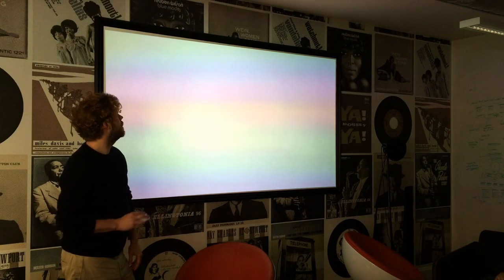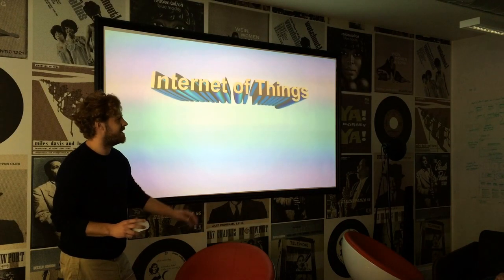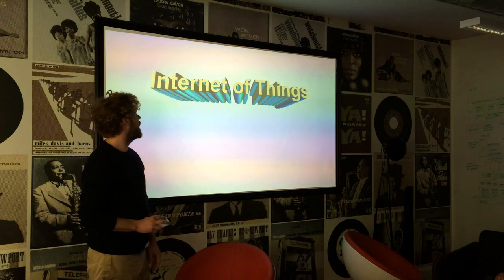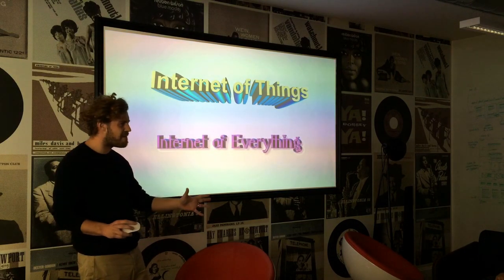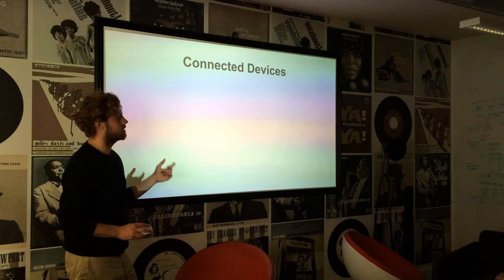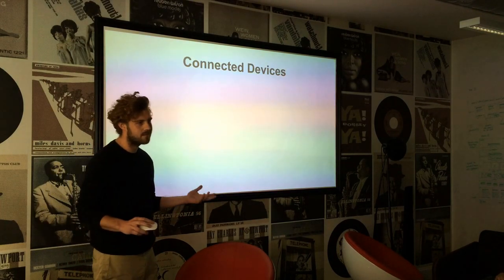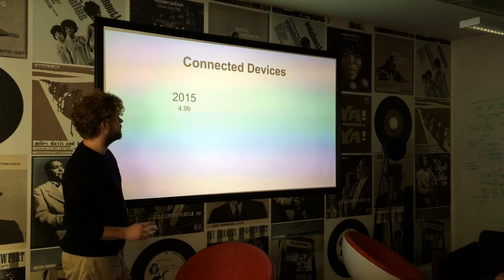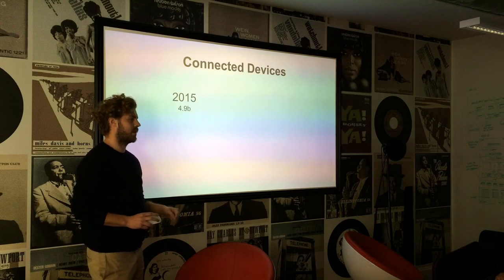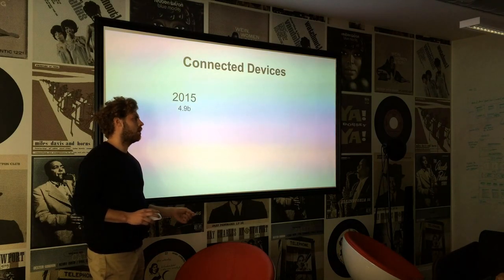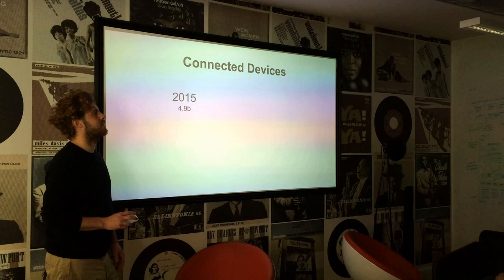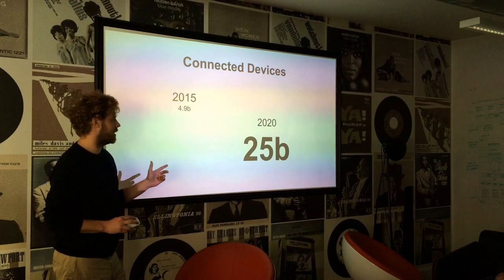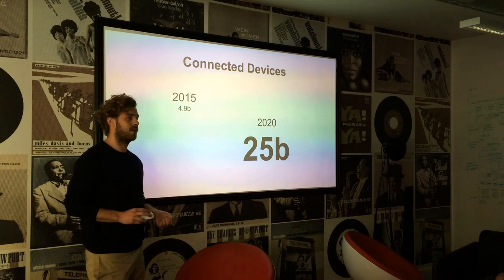So at the moment we have things like the internet of things, internet of everything — actually it's all just connected devices. In 2015 we have 4.9 billion connected devices around the world. Gartner, one of the big companies looking at this area, expects that in 2020 there's going to be 25 billion connected devices.